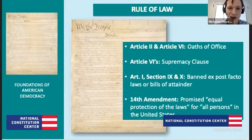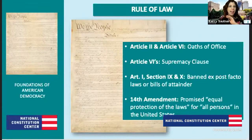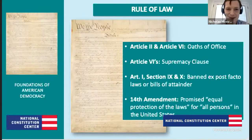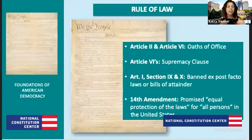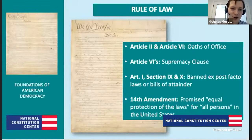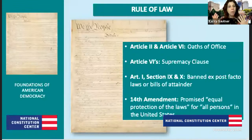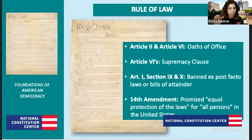The idea of rule of law is like every fair game you've ever played: the rules have to be clear, written down, and fair — and you can't change them after the play is over. A bill of attainder means you can't make a law that specifically targets one person, like saying 'Kerry Sautner is illegal.' This connects well with the 14th Amendment: equal protection of the laws means laws are equally distributed to everybody, and you are also equally protected by those laws.